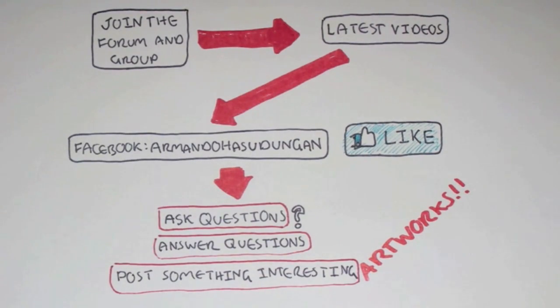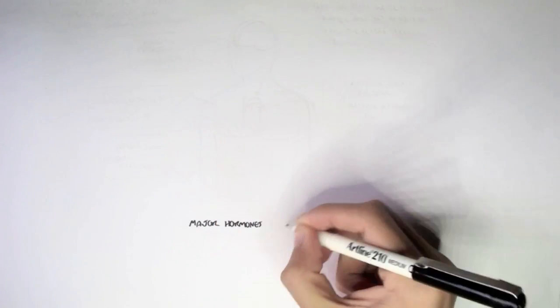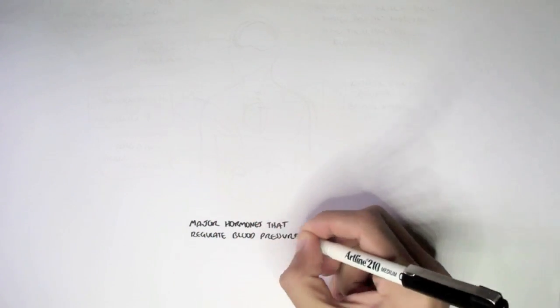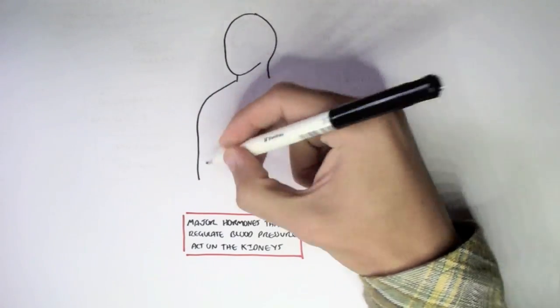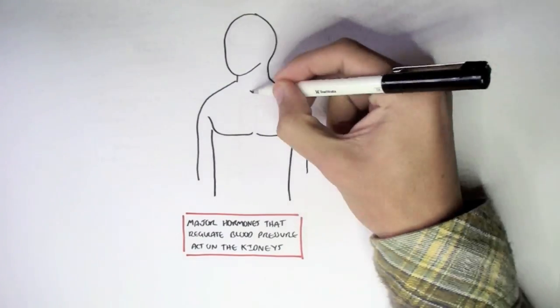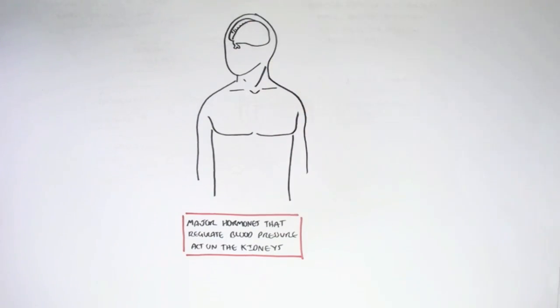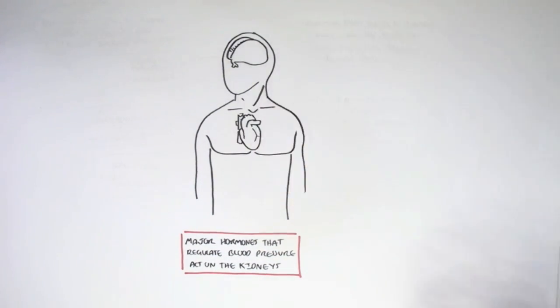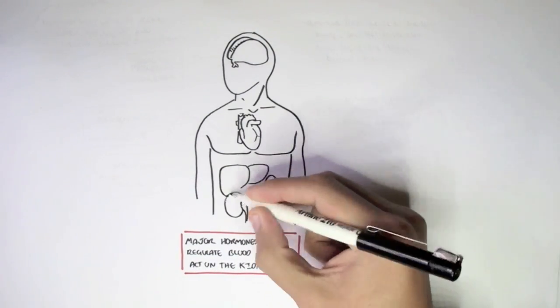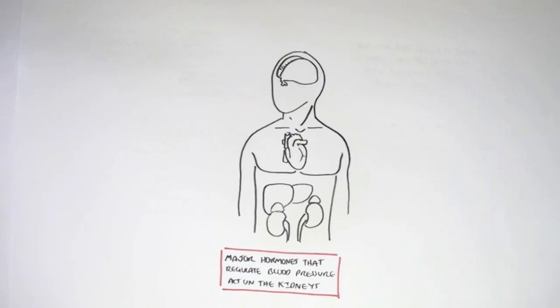In this video, we're going to look at a few hormones that regulate blood pressure. The major hormones that regulate blood pressure act on the kidneys, either indirectly or directly. Let's have a look at four major hormones. Here, I'm drawing some organs from where these hormones are secreted. First, let's look at the hormones that increase blood pressure.